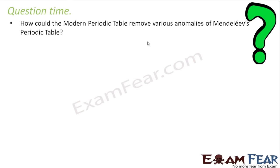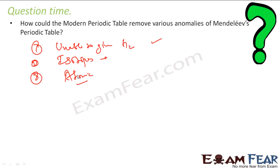Now it's the question time. How could the modern periodic table remove various anomalies of Mendeleev periodic table? First thing was Mendeleev periodic table was unable to give hydrogen a place. This was cleared by modern periodic table. Then isotopes was confusing, there was no space for isotopes. This doubt was cleared again by modern periodic table.